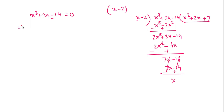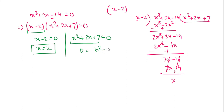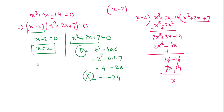So we have two factors: (x − 2)(x² + 2x + 7) = 0. From x − 2 = 0, we get x = 2 as the first solution. For x² + 2x + 7 = 0, the discriminant is b² − 4ac = 4 − 28 = −24, which is negative. So this quadratic has no real solutions.